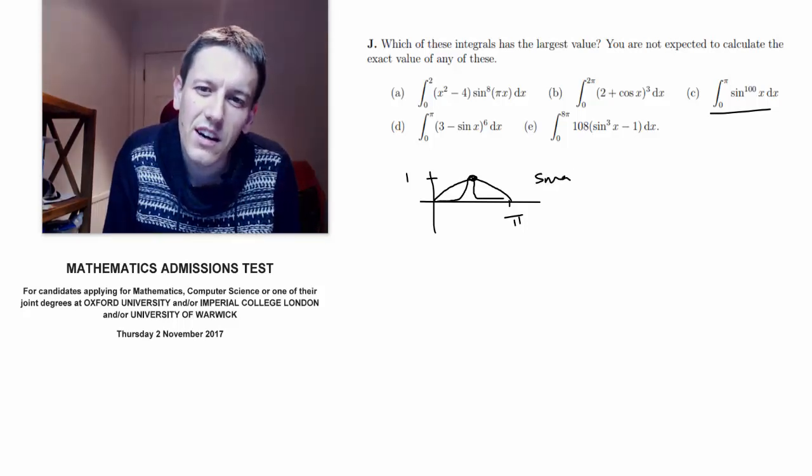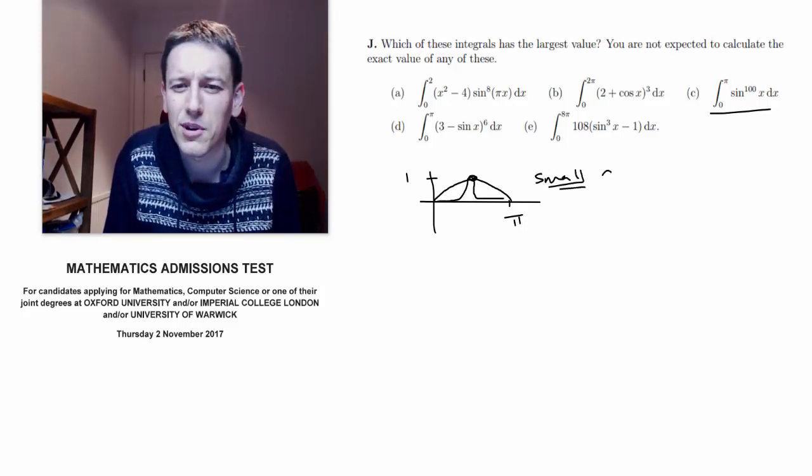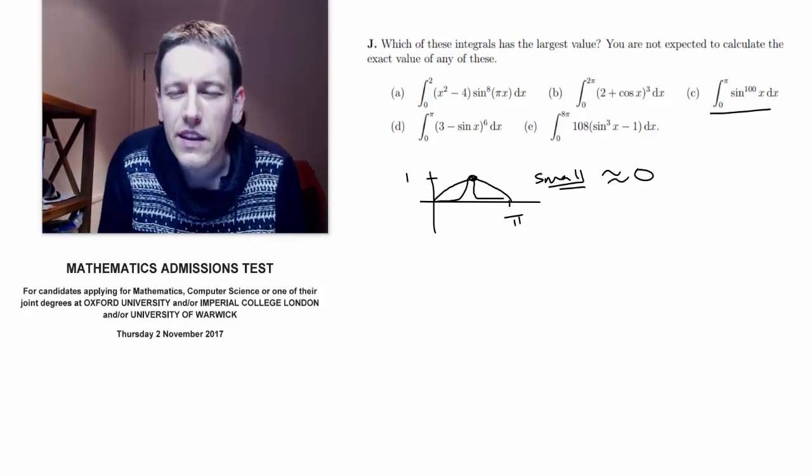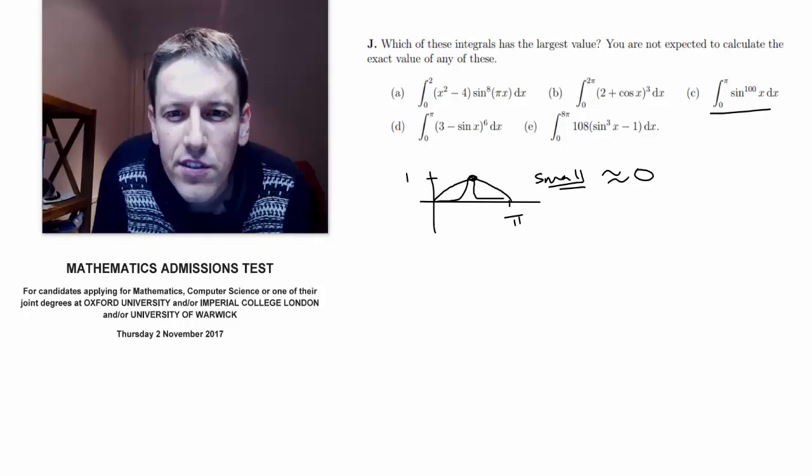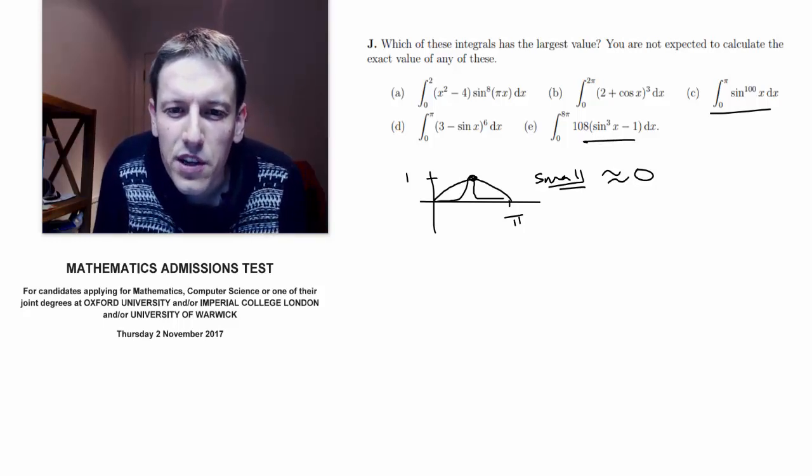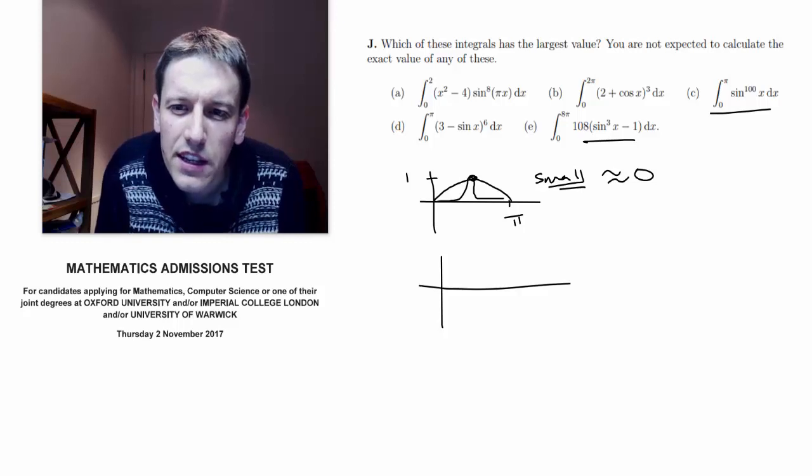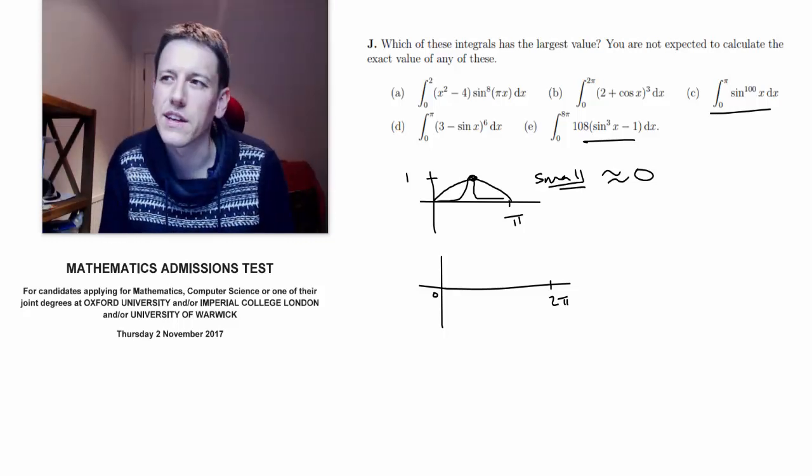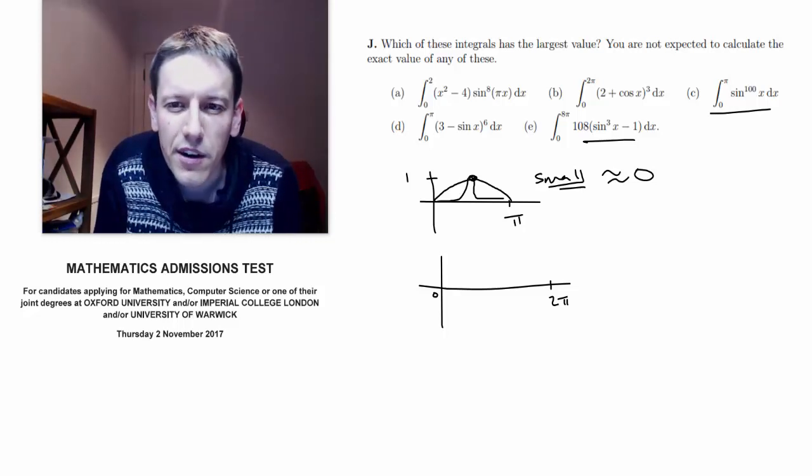So basically this integral is going to be quite small. I'm not going to say it's equal to 0, but it's not going to be that far away from 0. That's all I'll think about that one for now. Let's try a different one. What about this one? Let's think about what this will look like. 108 sine cubed x minus 1 between 0 and 8 pi. I'm just going to worry about it from 0 to 2 pi because it will then repeat every 2 pi after that.